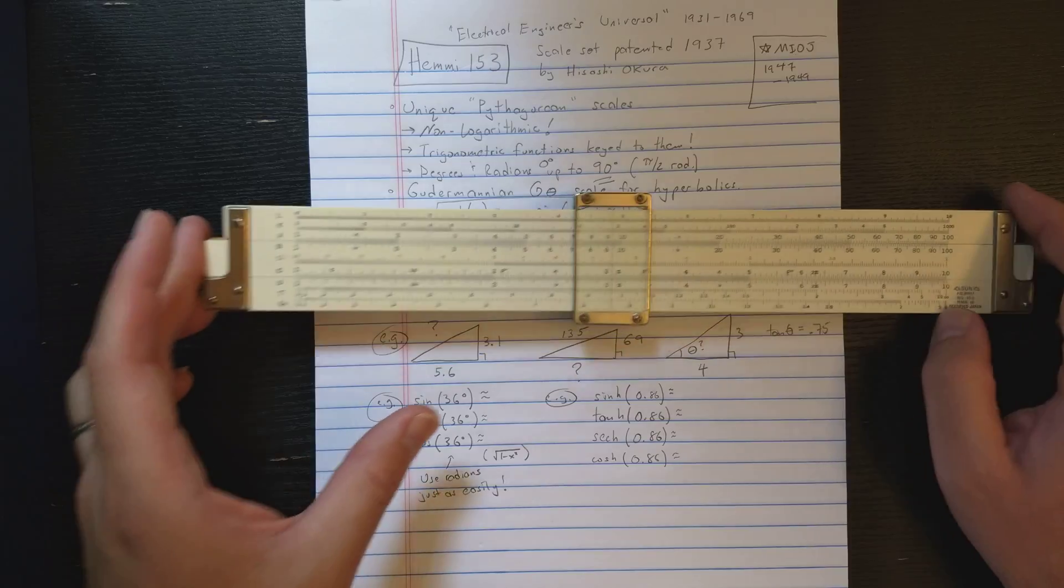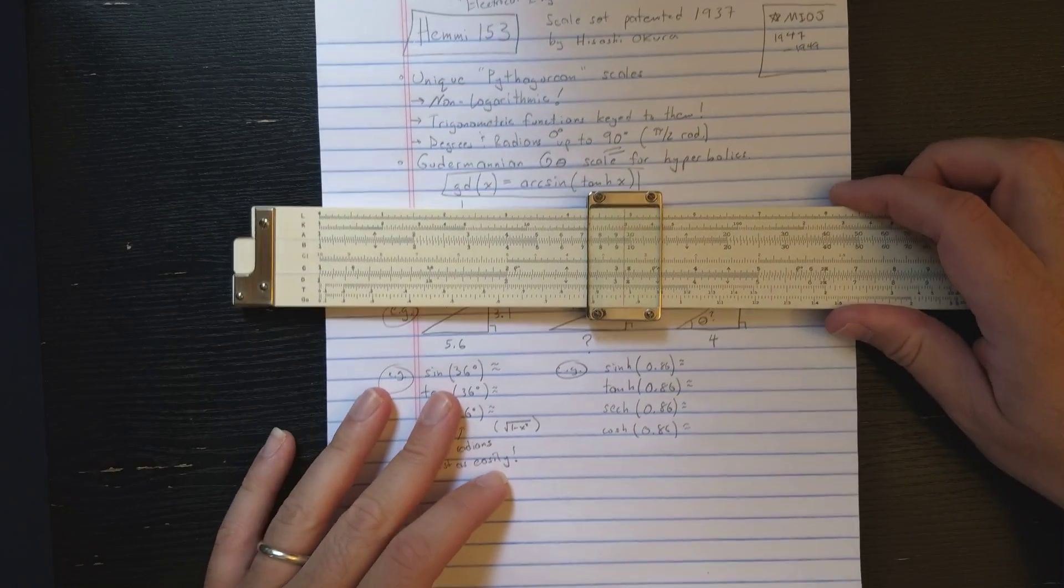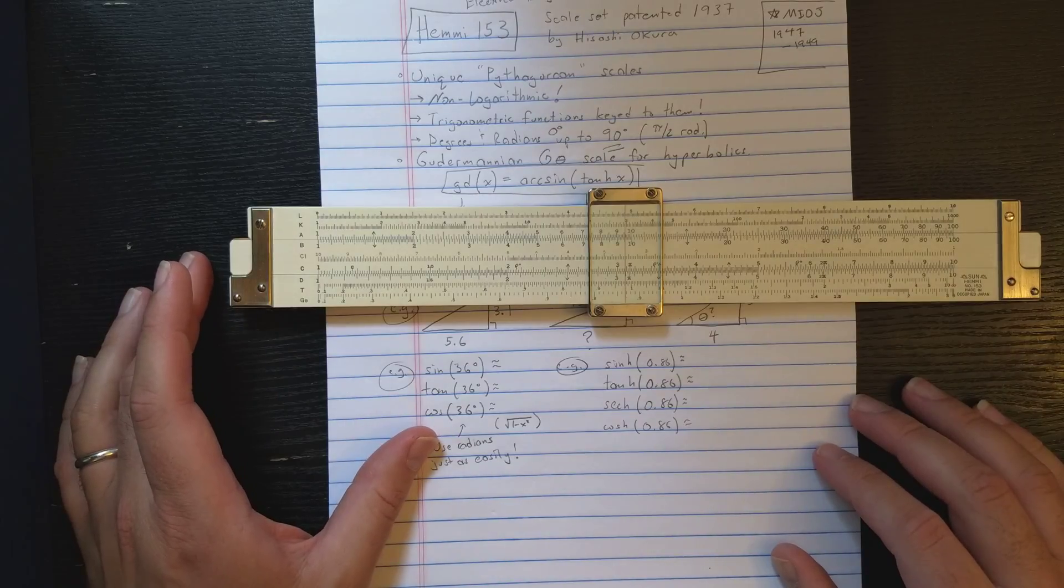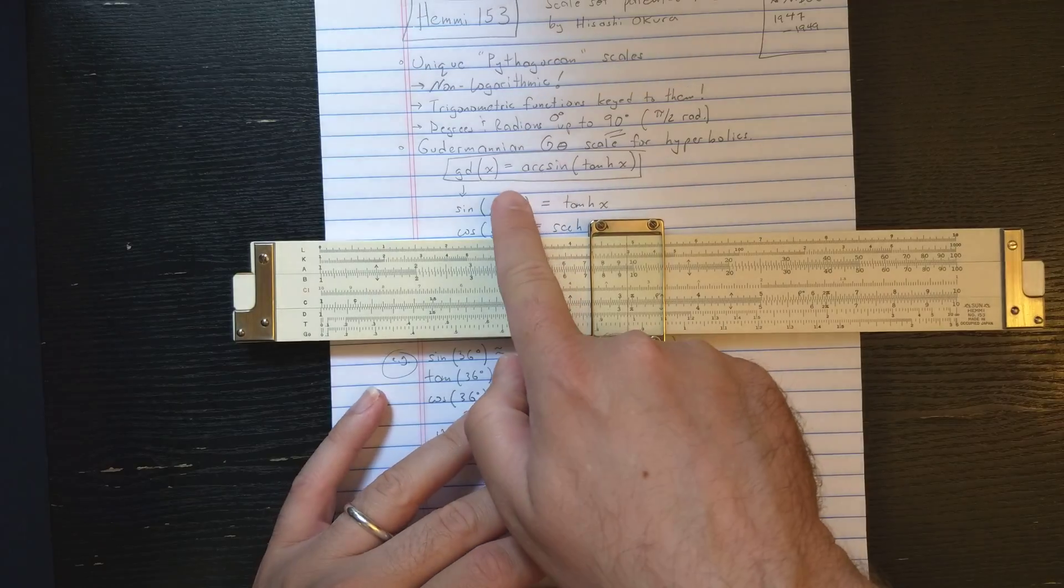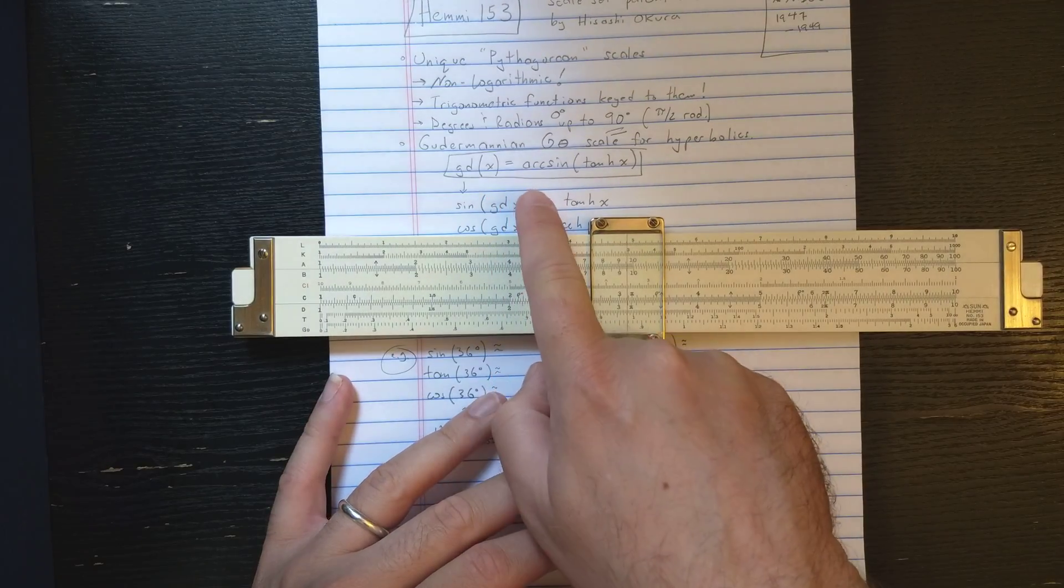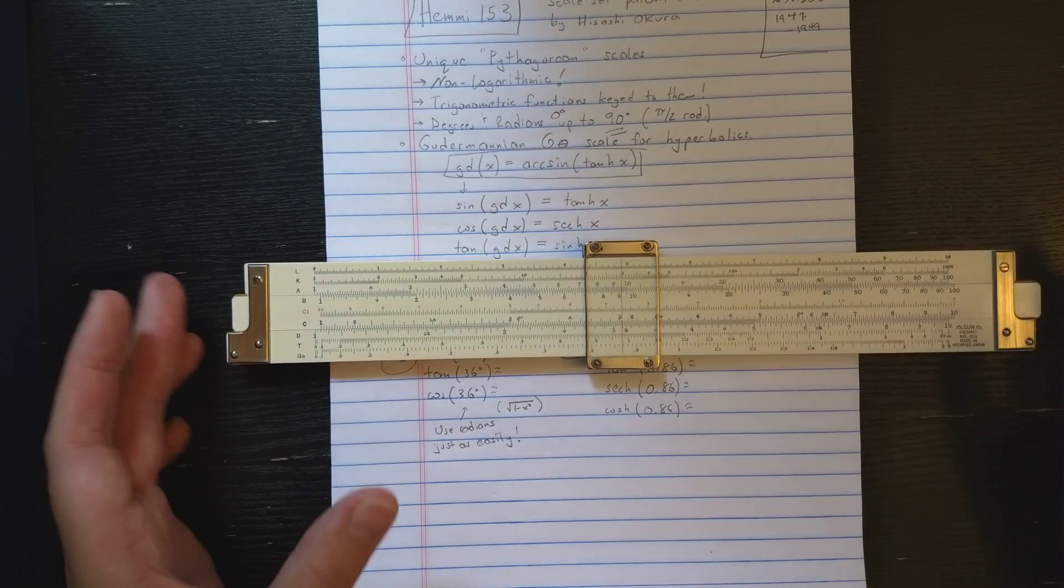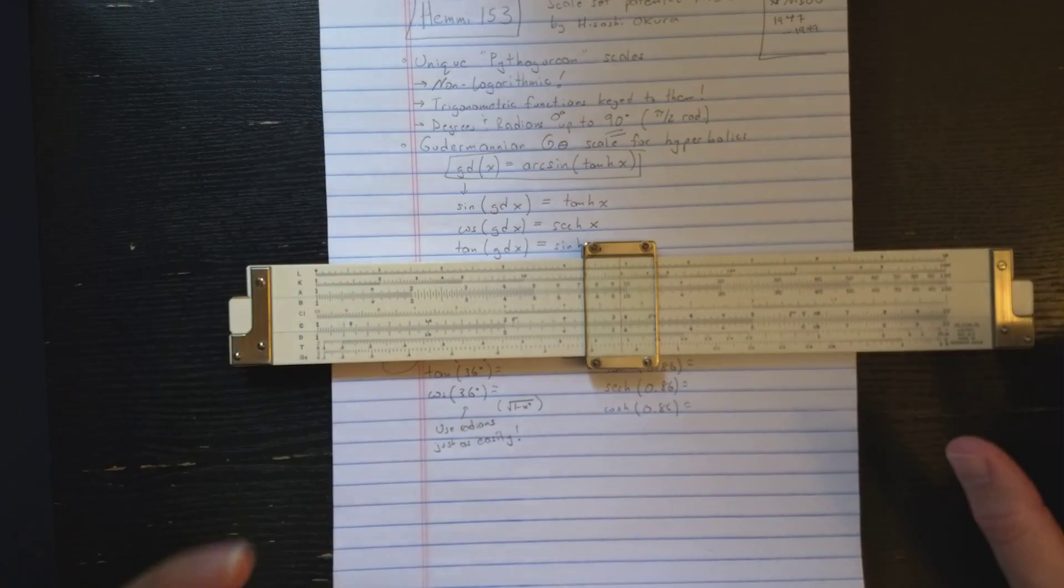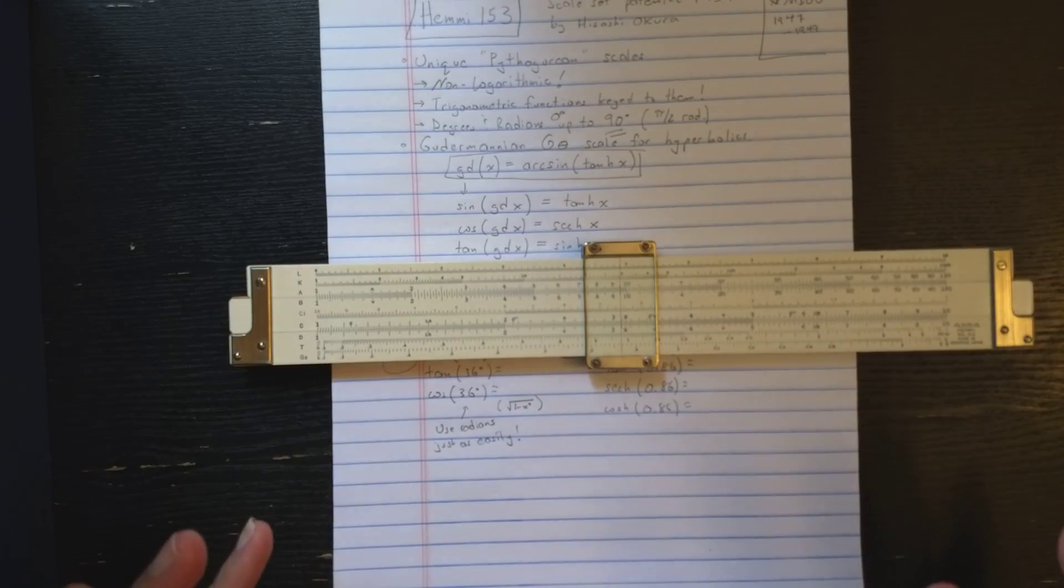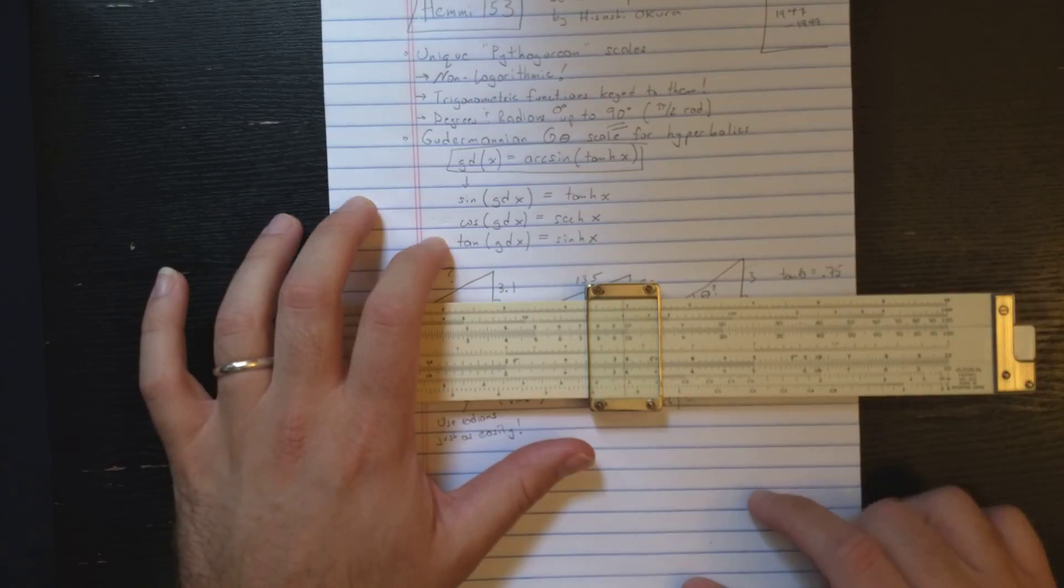This scale, which really makes this slide roll unique, is this G theta scale, which is called the Goudermannian scale. The Goudermannian function, an easy way to define it is Gd of X is arc sine of tanch X. You could also define it with an integral.